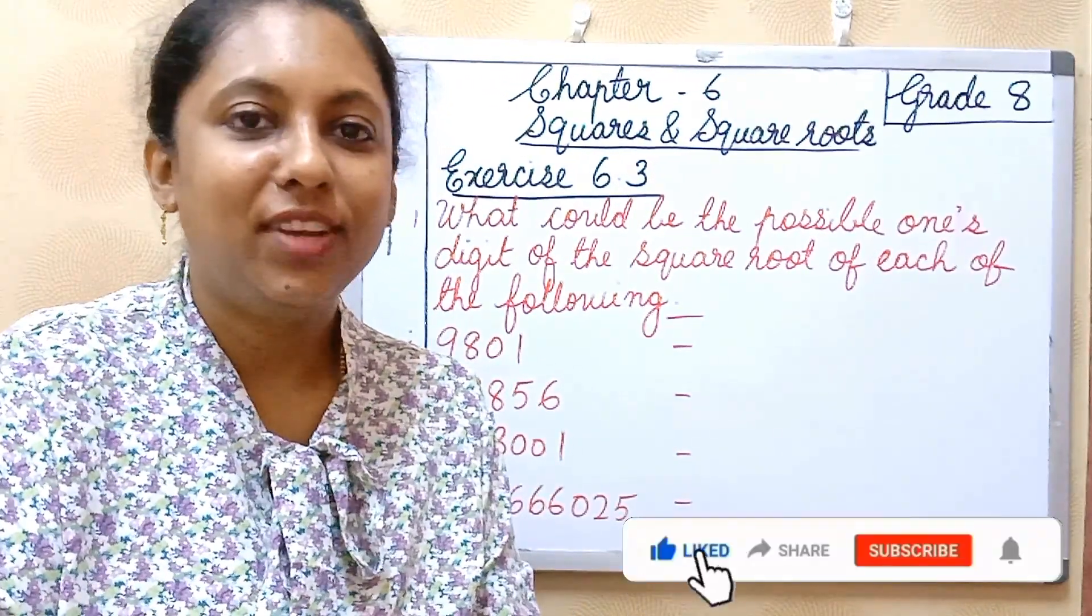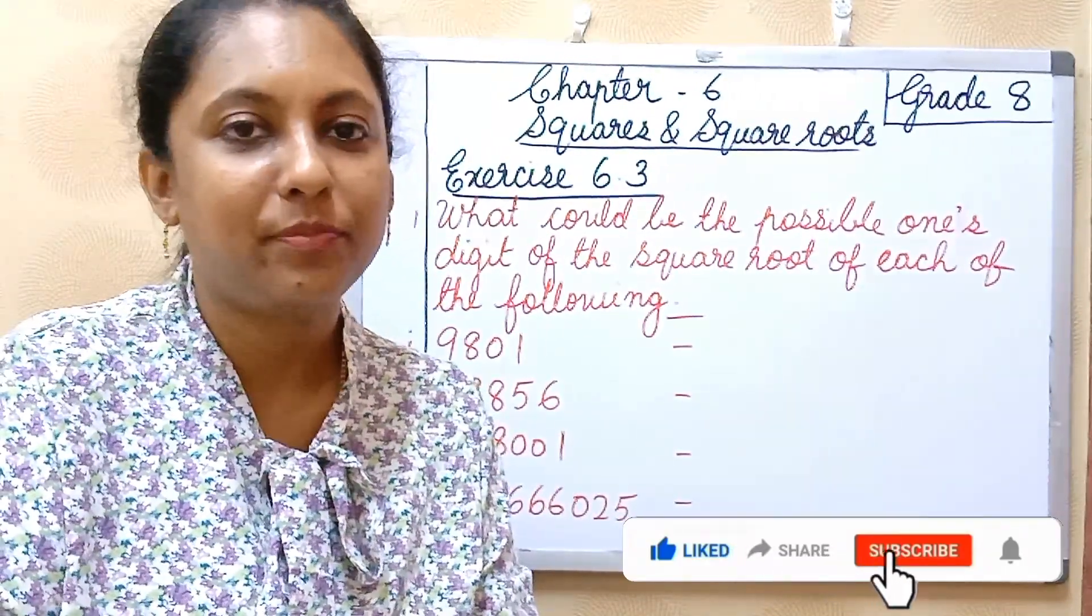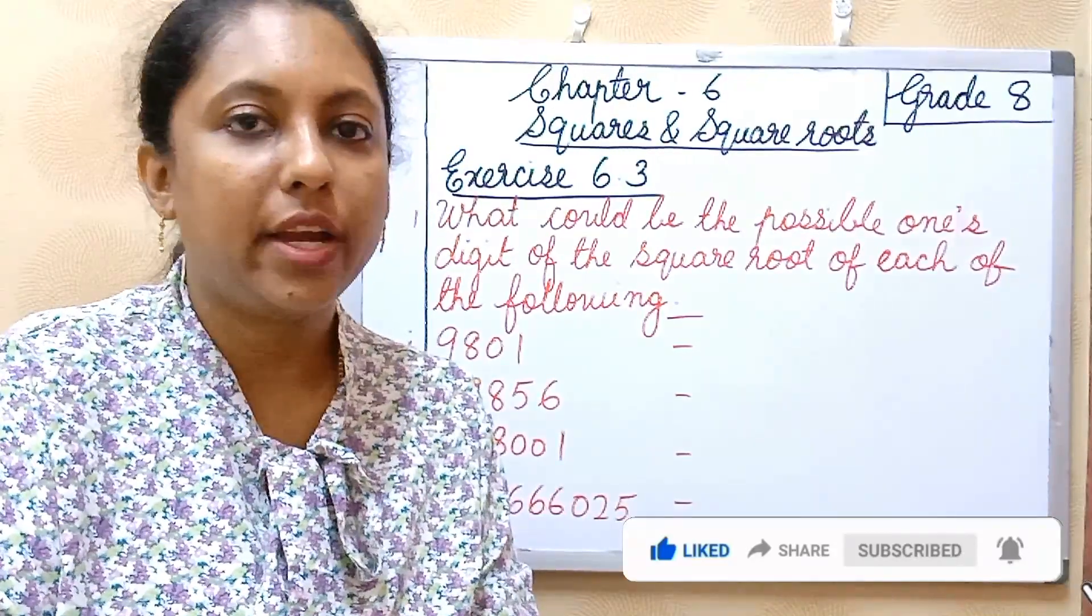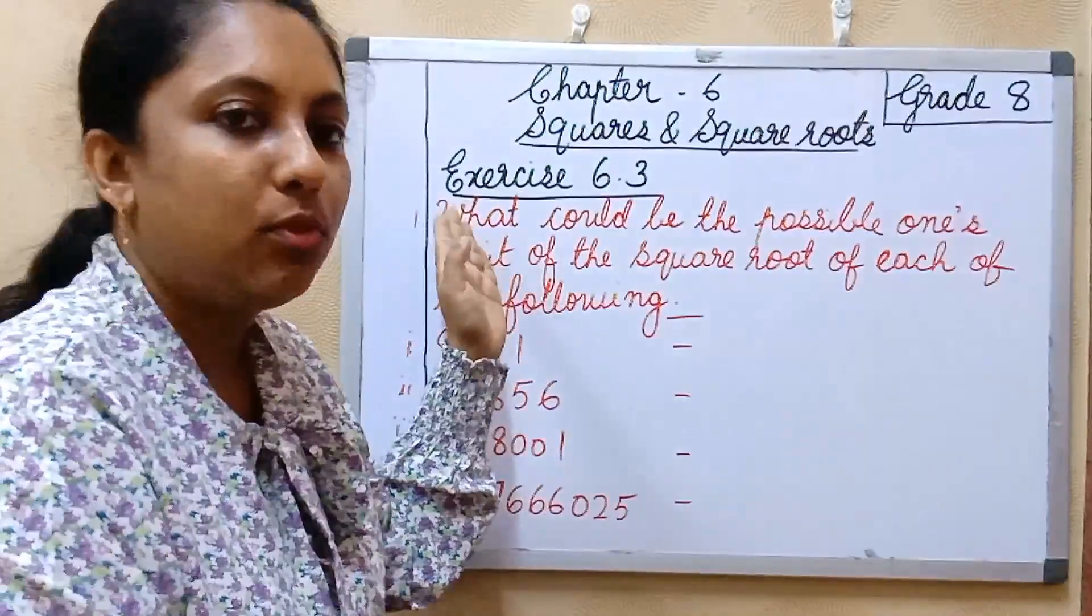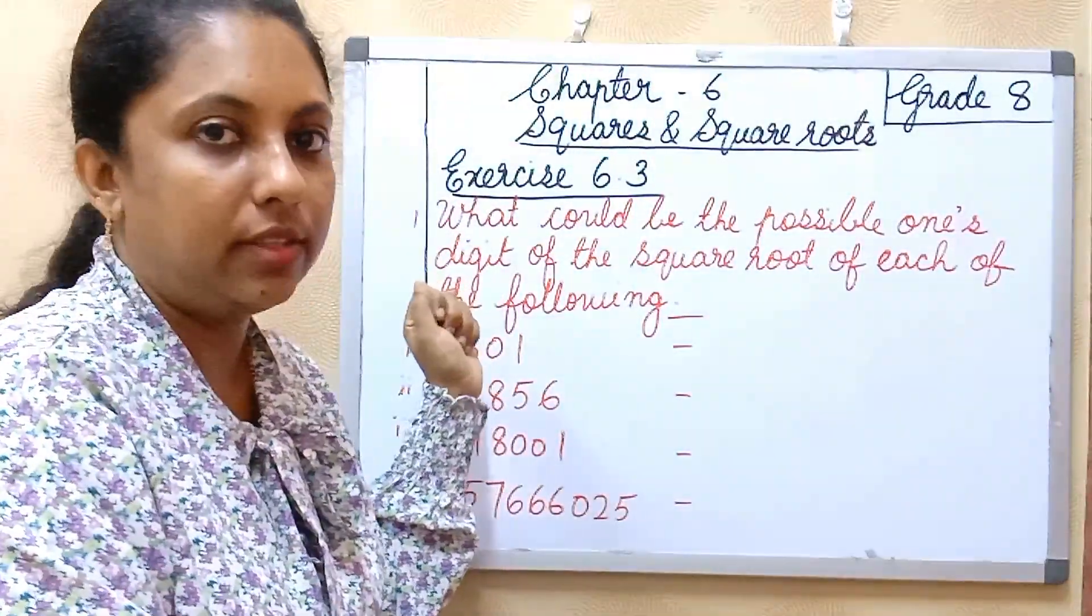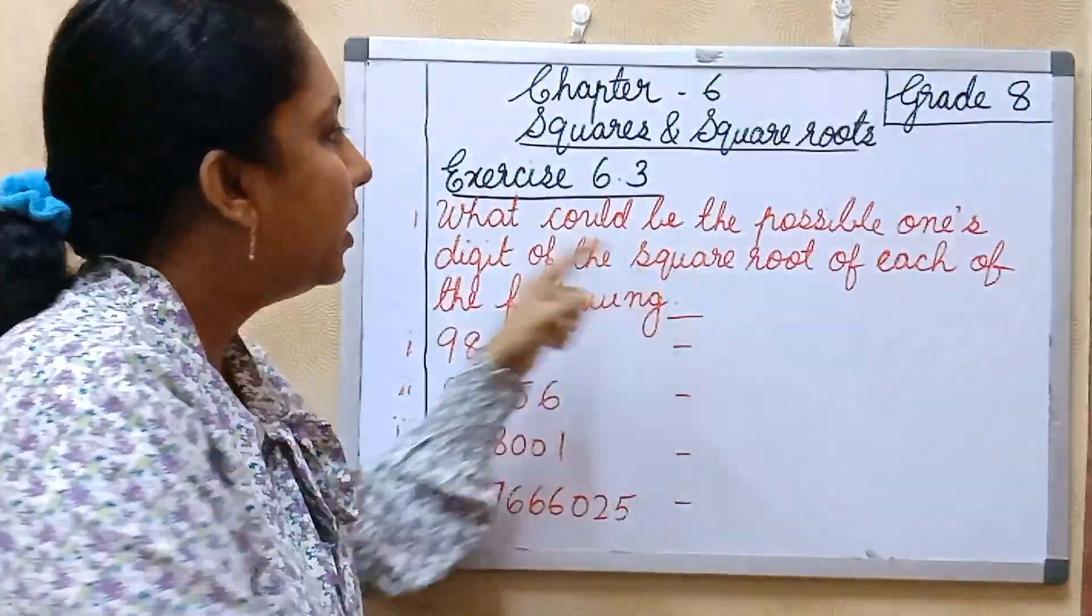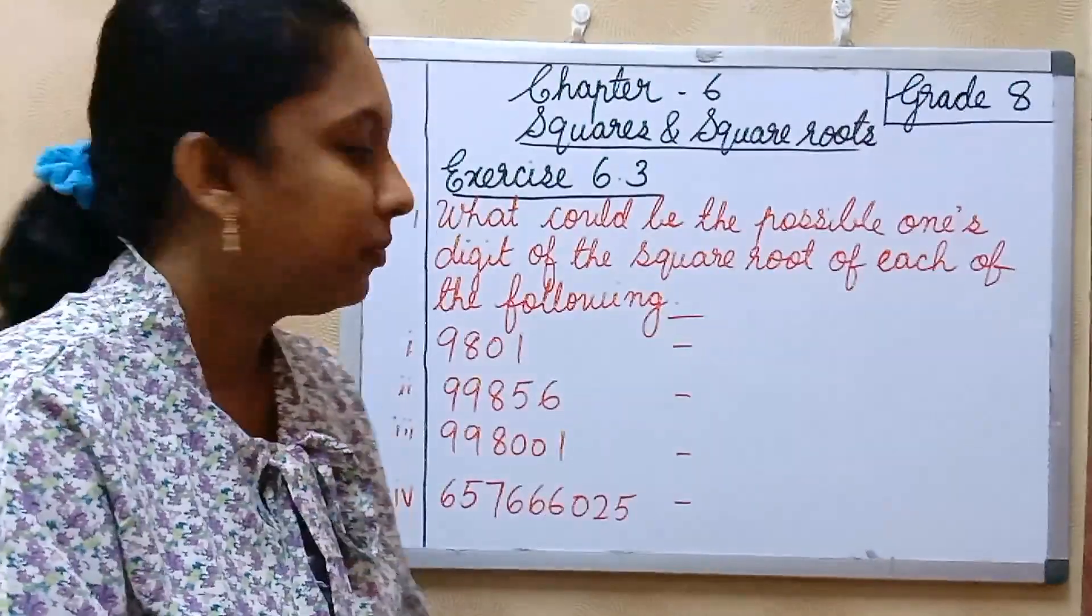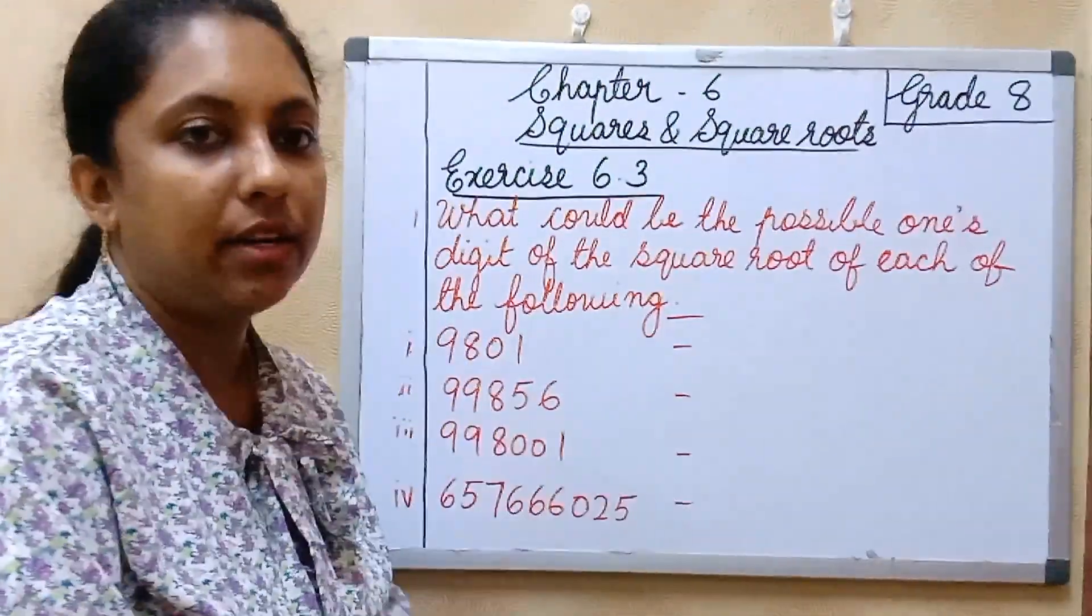Hi everyone, welcome back to softness method. Hope you all are fine. Today we can continue chapter 6, squares and square root. We can do textbook exercise 6.3. First question: what would be the possible points digit of the square root of each of the following? First number 9801.